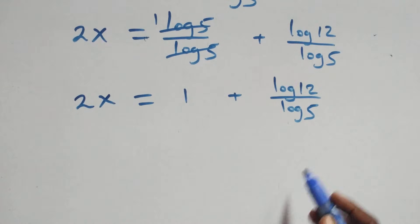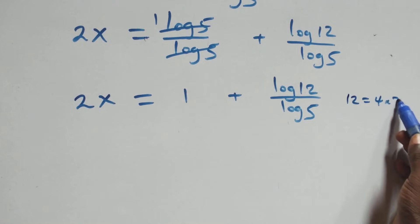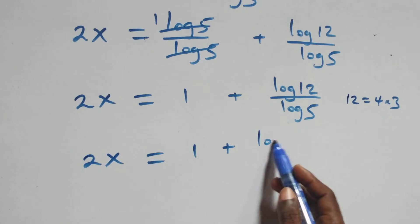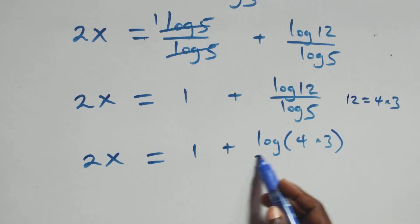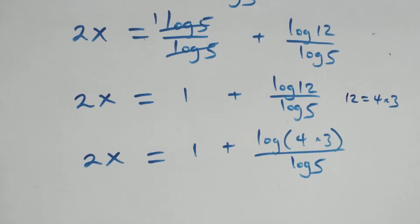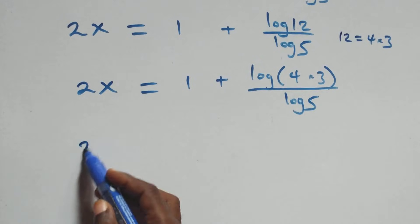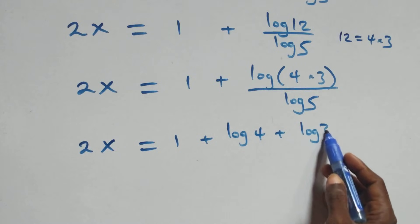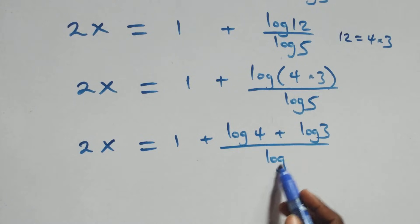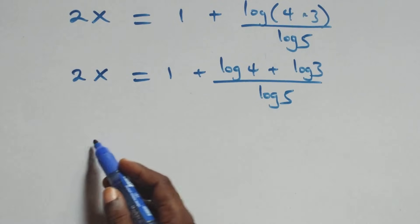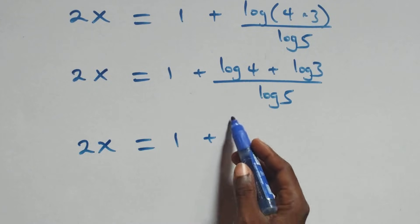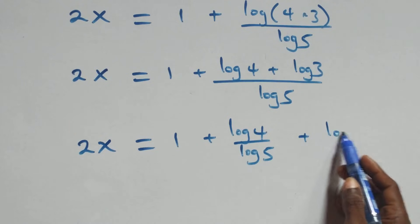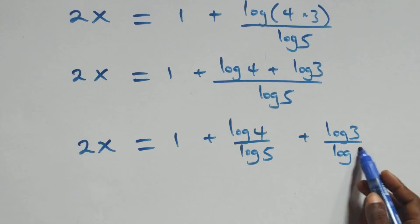Then, next step here: 12 can be written as 4 times 3. And here this becomes 2x equals to 1 plus log(4 times 3) over log 5. Then, applying the logarithm product rule, we have 2x equals to 1 plus (log 4 plus log 3) over log 5. Then we separate this into two fractions, and we have 2x equals to 1 plus log 4 over log 5 plus log 3 over log 5.